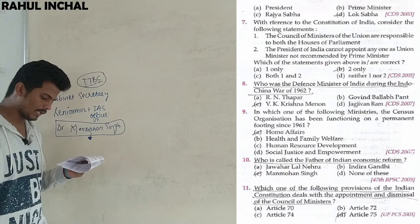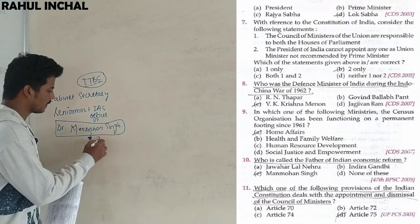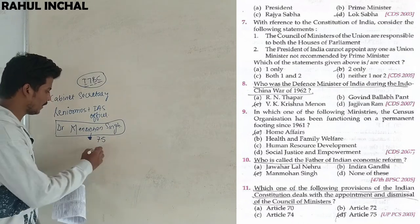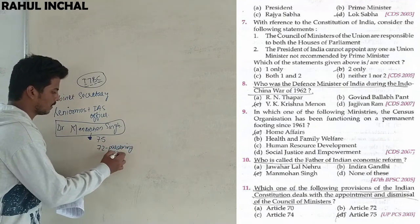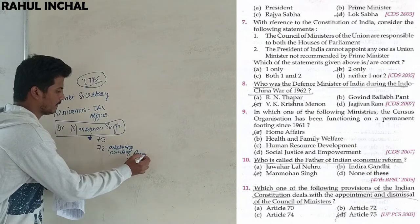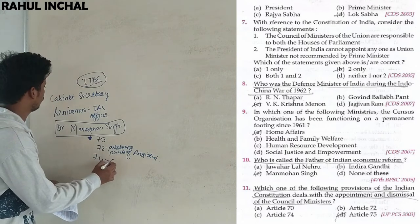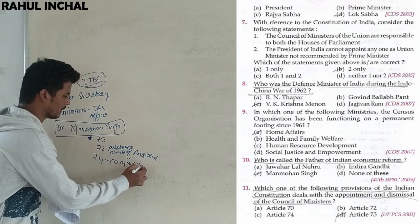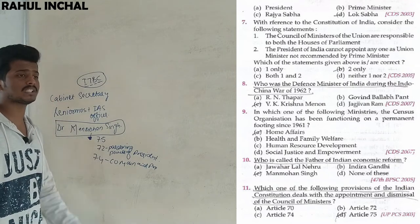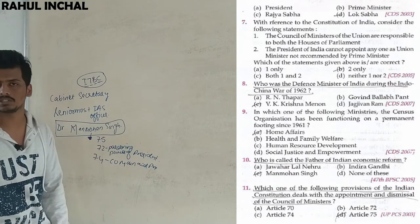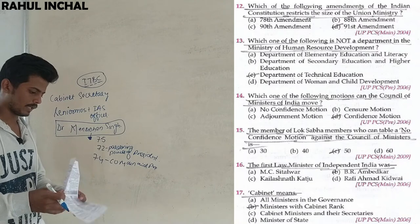Which provision of the Indian Constitution deals with the appointment and dismissal of the Council of Ministers? That is Article 75. Article 72 and 73 relate to pardoning power of the President. Article 74 states that the Council of Ministers can aid the President. Article 70 deals with discharge of President's functions in contingencies.